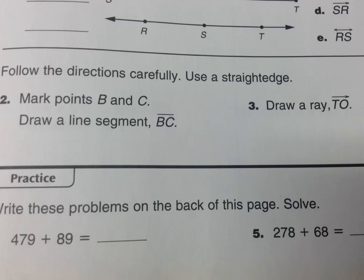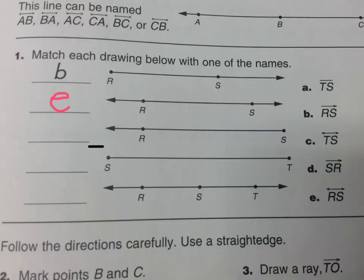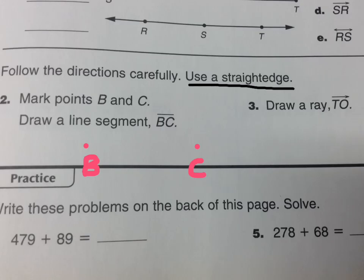The next part asks you to mark points B and C. Put that there and there, and label them B and C. And then you make a line segment. The other thing is you're supposed to use a straight edge. I have a ruler, but you can use really anything that will help you write straight to make my line segment.